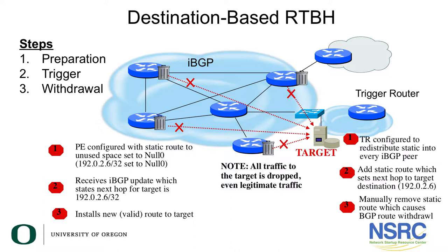This picture shows what was just described. With destination-based remotely triggered black hole filtering — the first instantiation when this technique was created — there are three specific steps: preparation, triggering the black hole, and then, once the DDoS attack has ceased, manually removing the static route from the trigger router so that all provider edge routers can install the new valid routes to the target and traffic is again legitimately routed to it.